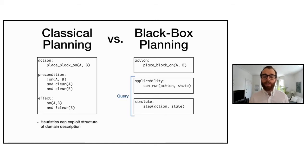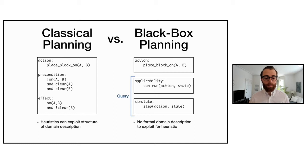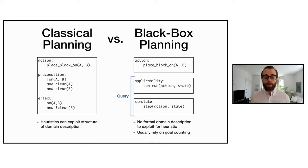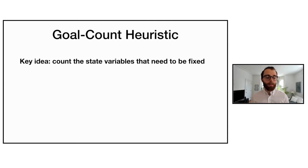With classical planning, heuristics can exploit the structure of the domain description to plan more efficiently. Whereas in black box planning, we don't have any formal domain description to exploit — we're essentially limited to relying on goal counting for our heuristic. The idea with goal counting is that we count the number of state variables that still need to be fixed in order to satisfy the goal condition.